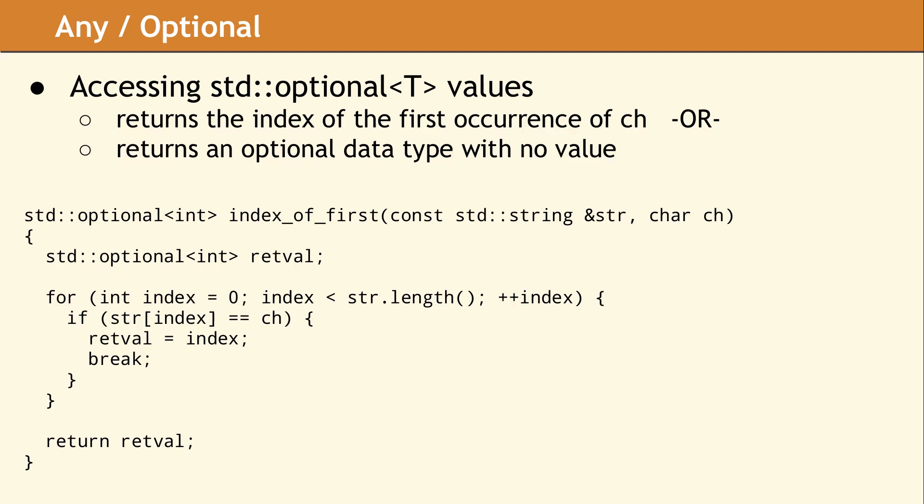One last point to remember is that this function will always return an std::optional<int>, even when the variable retval is not assigned and contains no value. This means there is no need to select and document a magical value to return when the search fails.